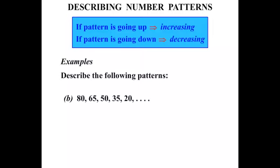The next one we've got 80, 65, 50, 35, 20. This time it is going down, the numbers are decreasing. To go from 80 to 65 we subtract 15.